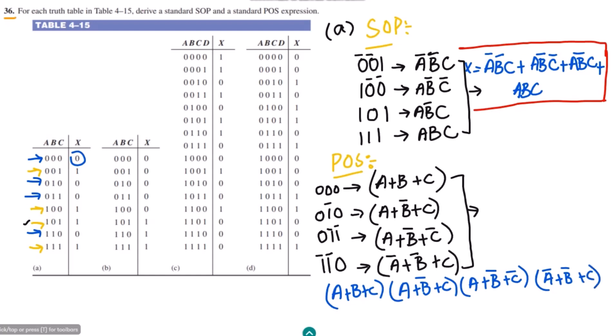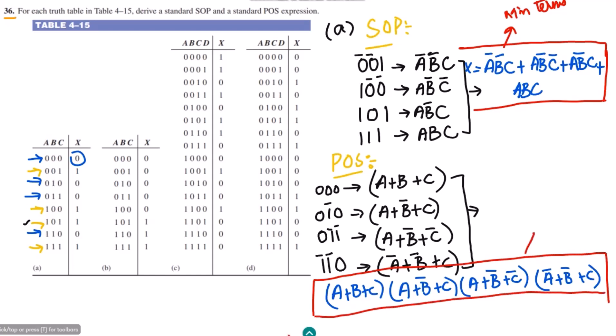These are the maxterms, which are sums, and I have to multiply them because this is the product of sum expression. So the final answer is: (A plus B plus C)(A plus B complement plus C)(A plus B complement plus C complement)(A complement plus B complement plus C). This is the answer for the product of sums — that is it for part A. In the upcoming video we will talk about part B, so take care of yourself and I will see you soon.